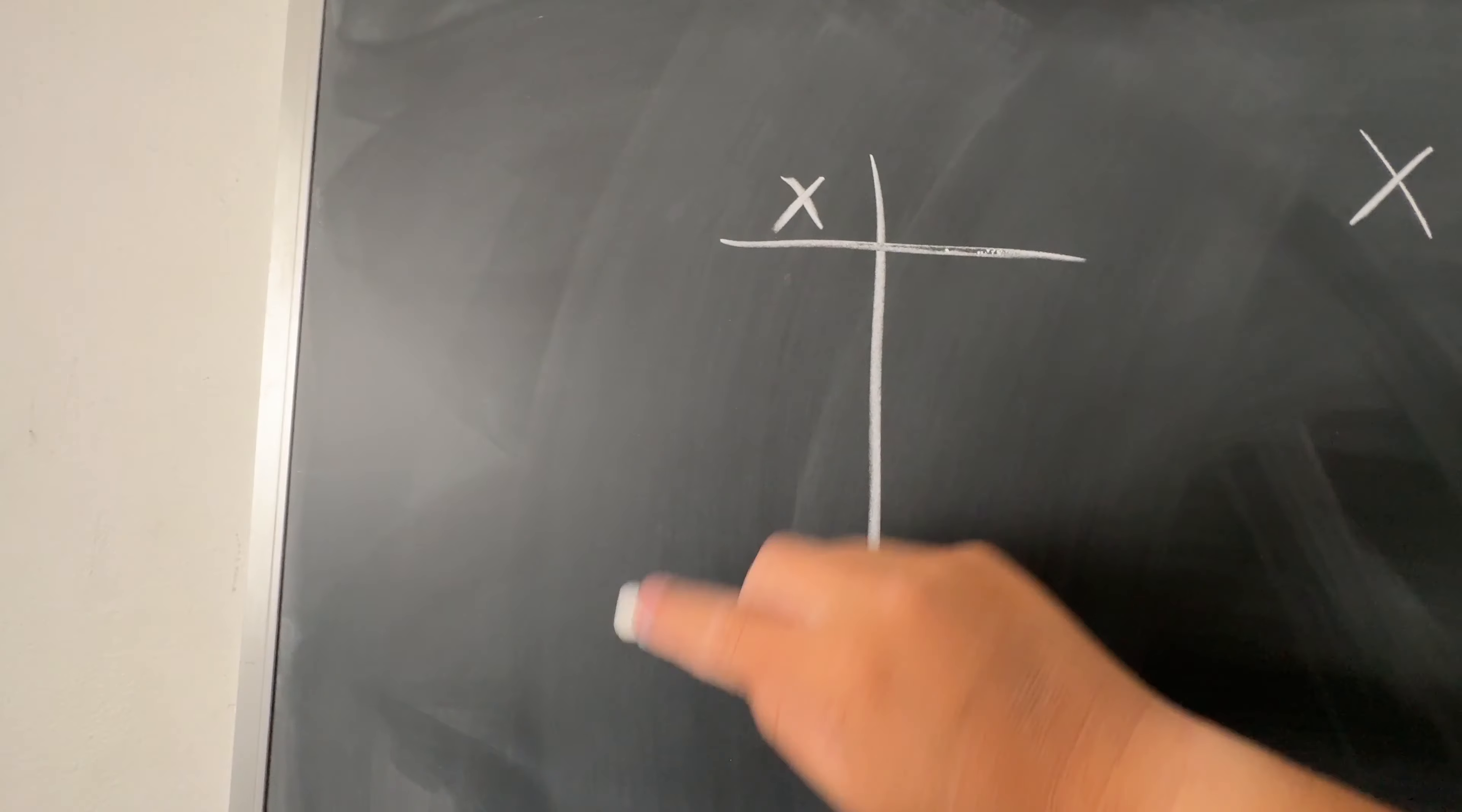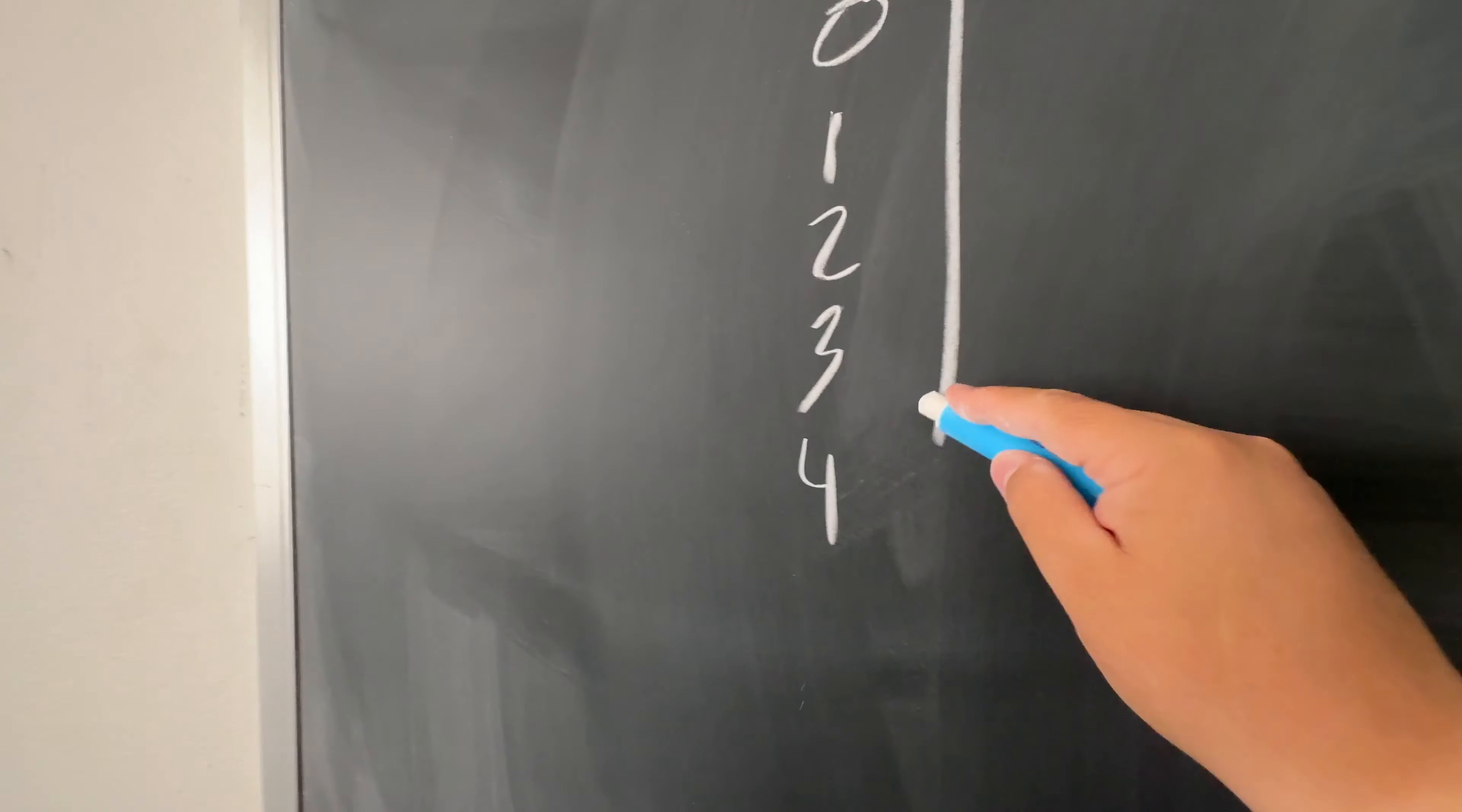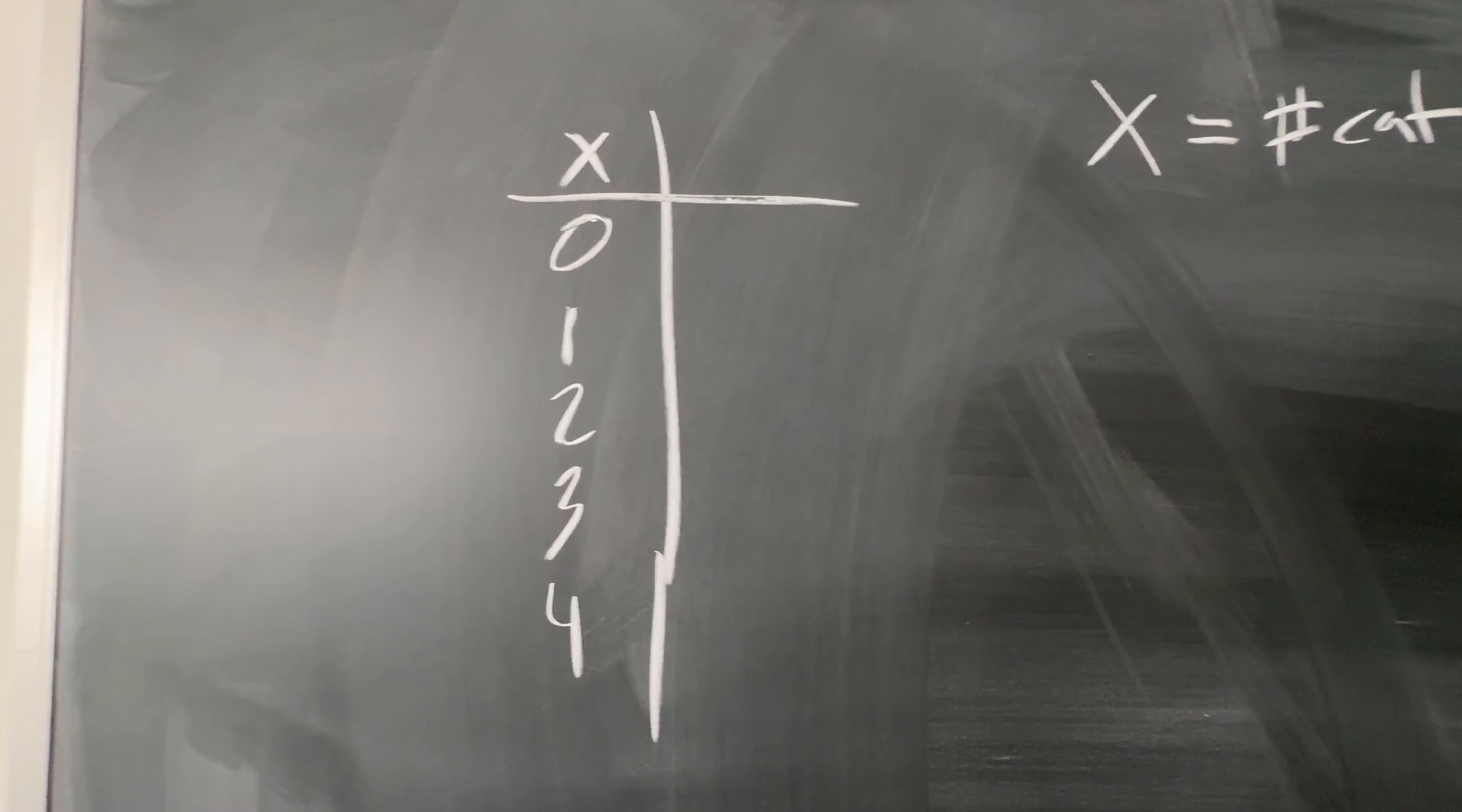And here, let's say you observe no cats, one cat, two cats, three cats, four cats, depending on how many people you observed over a long period of time.